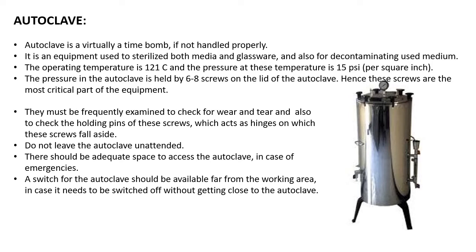For operating the autoclave: first check the drain screen to make sure it is not plugged. For a benchtop unit, fill the reservoir with deionized water to the fill line. Place items to be autoclaved in the chamber, close the seal and the lid. On the keypad, select the type of load, sterilization temperature, and time, then start the autoclave cycle.